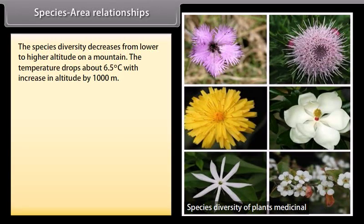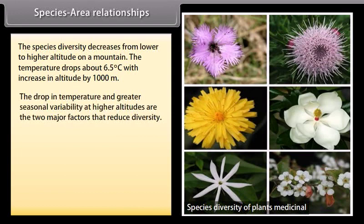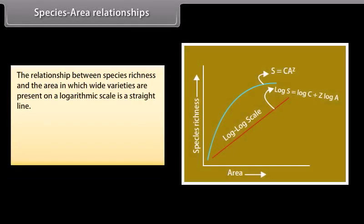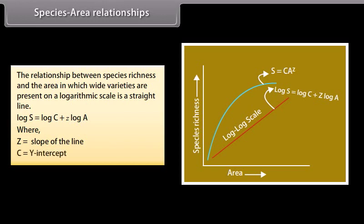Species diversity decreases from lower to higher altitude on a mountain. The temperature drops about 6.5 degrees Celsius with an increase in altitude of 1,000 meters. The drop in temperature and greater seasonal variability at higher altitudes are the two major factors that reduce diversity. More complex and heterogeneous physical environments favor more complex and diverse flora and fauna. The relationship between species richness and area on a logarithmic scale is a straight line: Log S = Log C + Z Log A, where Z is the slope of the line and C is the y-intercept.